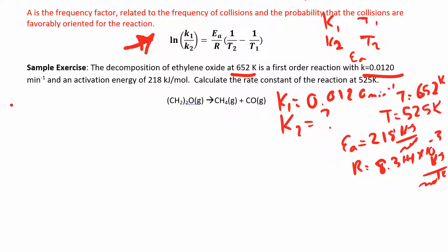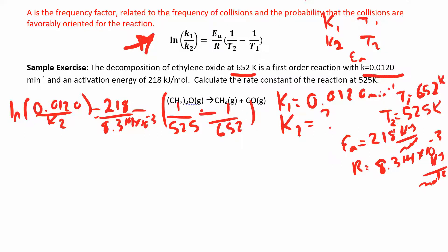We have natural log of K1, which is 0.0120 over K2, equals Ea 218 over 8.314 times 10 to the negative 3 times 1 over T2, this is T1, so 525 minus 1 over T1, which is 652.